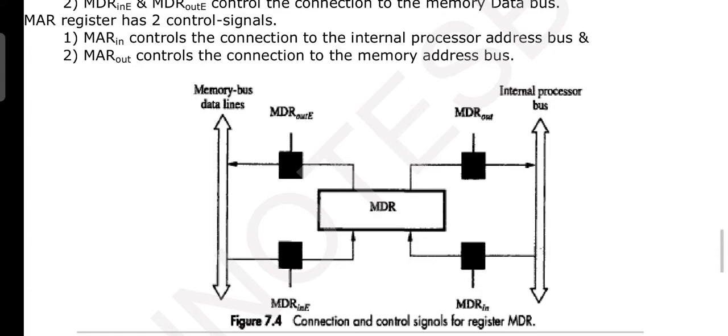MDR_out as well as MDR_in. Dedicated gate that you can see. And here, memory bus data lines, towards them again you can see the similar gating.